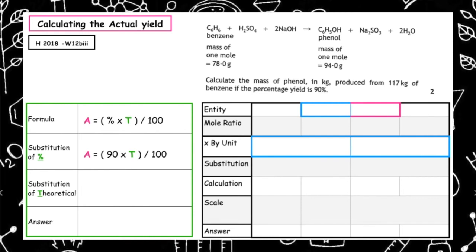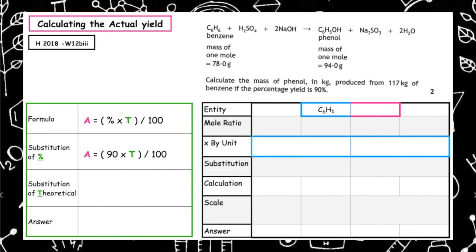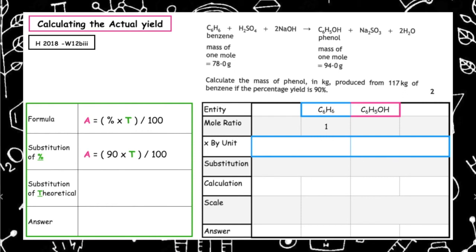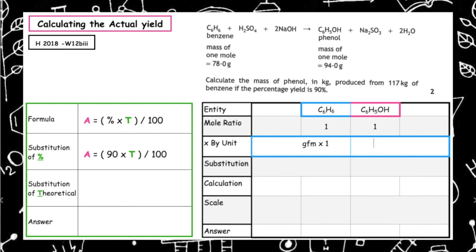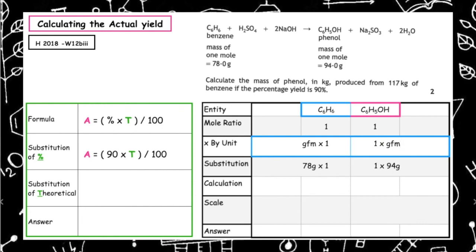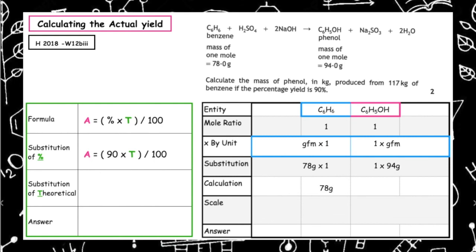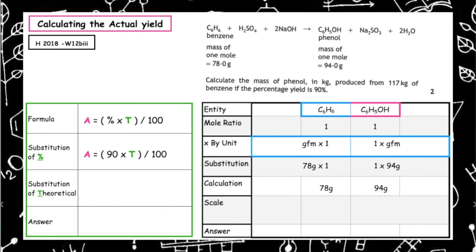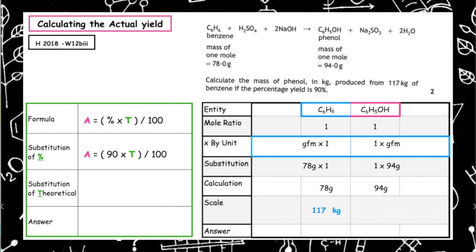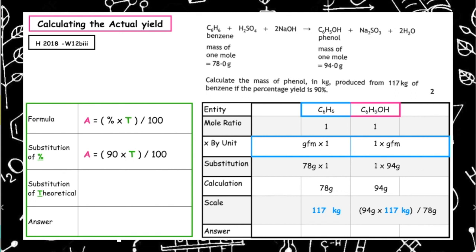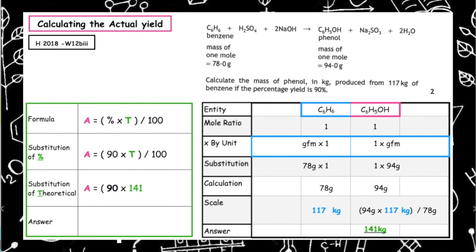We take the entities given — benzene (C₆H₆) and phenol (C₆H₅OH) — in a one-to-one ratio from the balanced equation. The information is in mass, so we multiply by the GFM. The GFM of benzene is 78 and the GFM of phenol is 94, meaning 78 grams of benzene produces 94 grams of phenol. We're given 117 kilograms, so we cross-multiply: 94 times 117 divided by 78 gives 141 kilograms. Substituting in: actual equals 90 times 141 divided by 100, giving an actual mass of phenol of 126.9 kilograms.